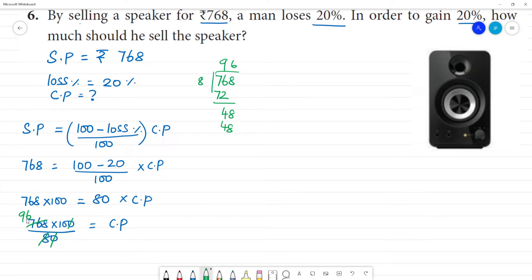96 into 10 is equal to 960. So, 960 is equal to CP. The cost price is equal to rupees 960. We are going to get 960 rupees.